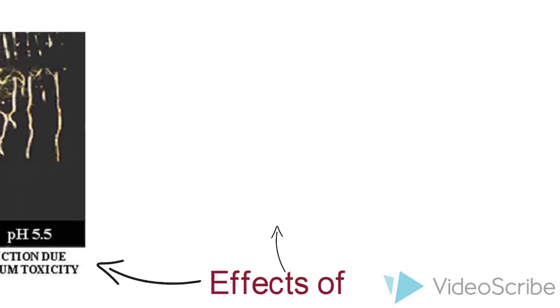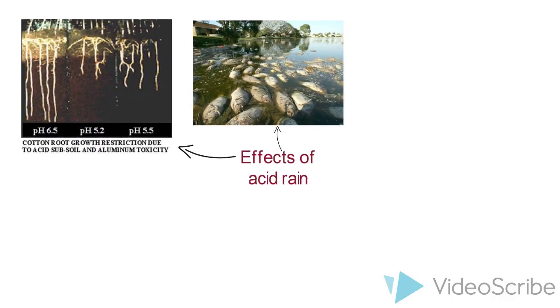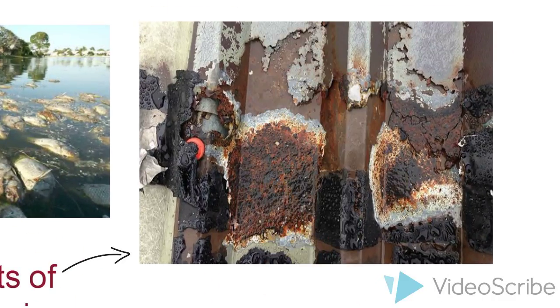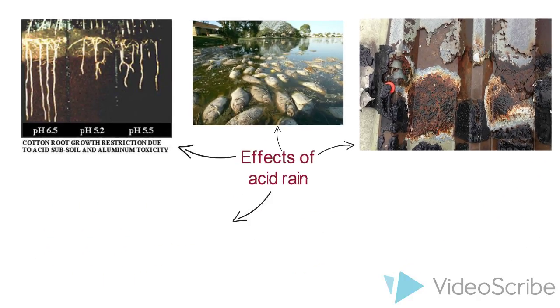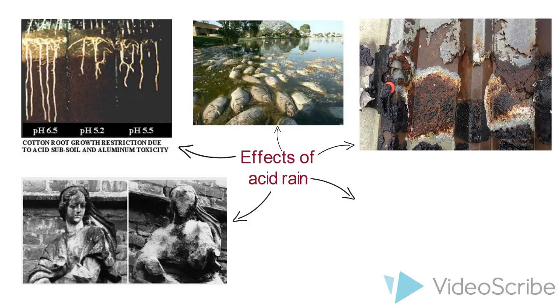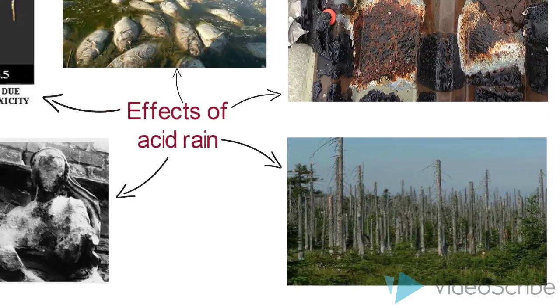Next, acid rain can also kill marine life by making the habitat unsuitable for life. Third, acid rain can cause metals to corrode faster. Acid rain can also corrode buildings and objects that are made of calcium carbonate as you can see in this statue over here. Last but not least, acid rains can damage trees and also destroy important habitats for living organisms.